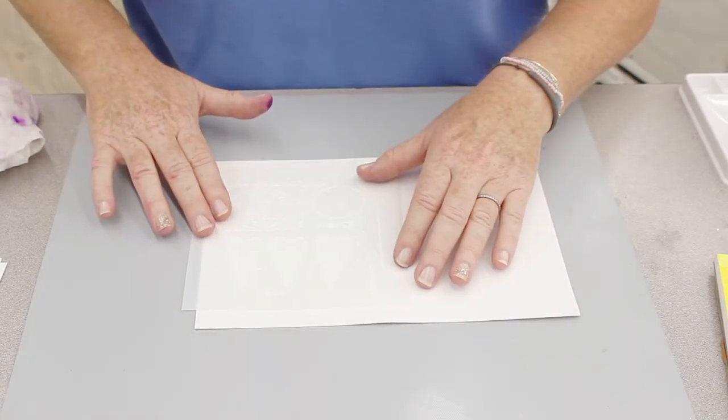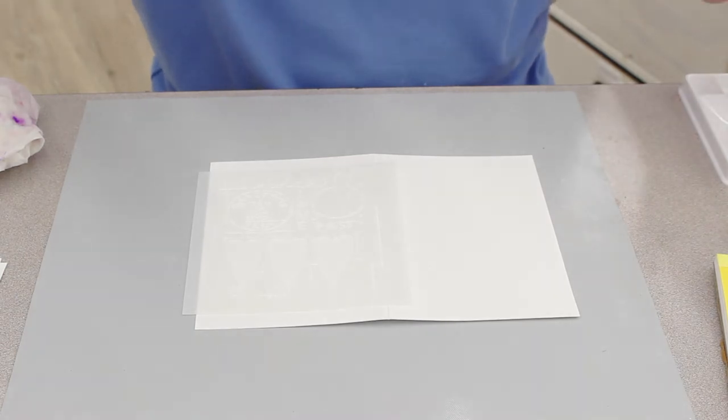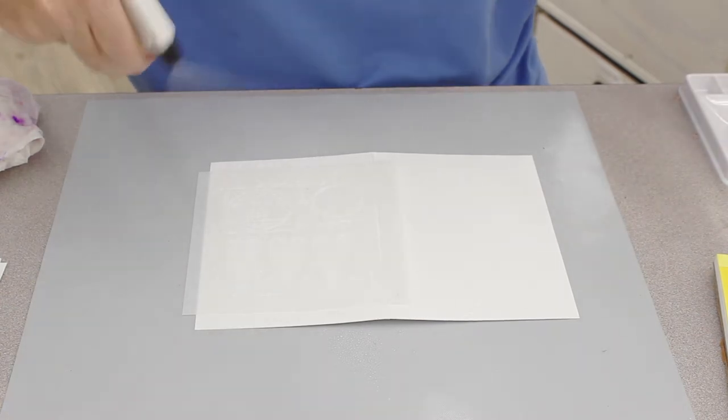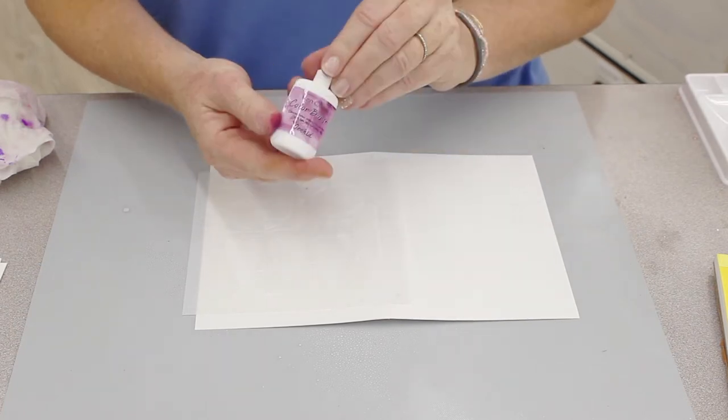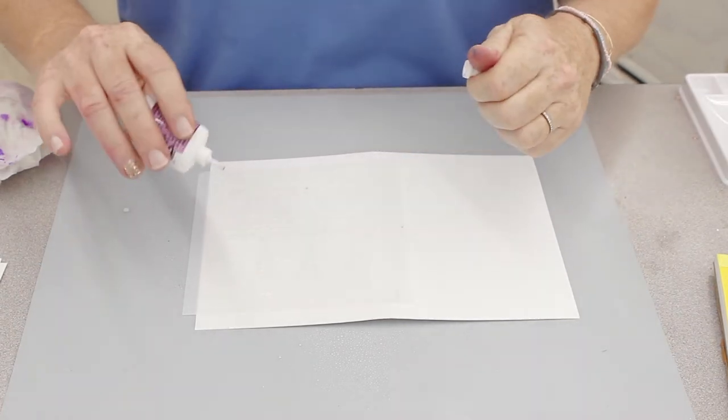So I'm just going to line it up like that and then give it a nice spritz of water. We call this spritz and sprinkle and be generous with it. Then I'm going to take the orchid color of Color Burst and tap tap tap.